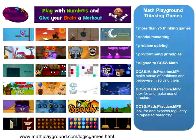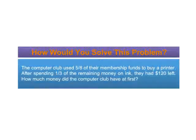Now I'd like to talk about an area of math that often confuses students from as early as second grade all the way through high school and beyond — and that would be word problems. Oh, if only there were a game for that — I'm working on it. So let's look at a typically confusing word problem: the Computer Club used five-eighths of their membership funds to buy a printer. After spending one-third of the remaining money on ink, they had $120 left. How much money did the Computer Club have at first?